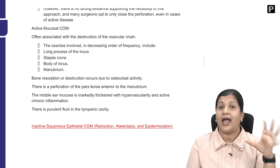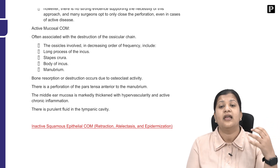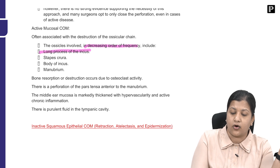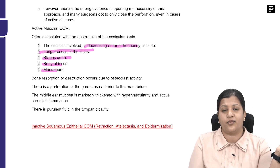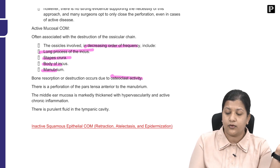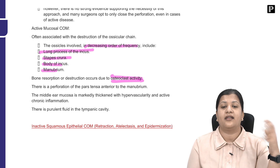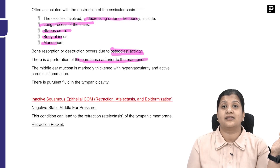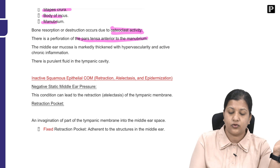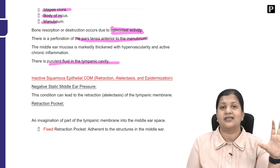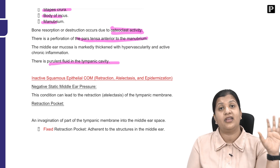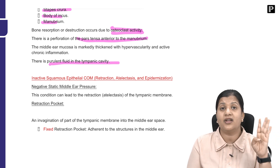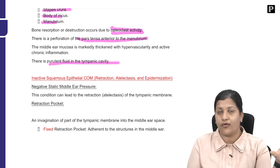In active mucosal disease, there is destruction and inflammation involving the ossicles. The order in which ossicles are involved is: long process of incus, stapes, body of incus, and manubrium. Bony resorption or destruction occurs mainly due to osteoclastic activity, with perforation of the pars tensa extending to the manubrium of the malleus. The middle ear mucosa is thickened, there is active and chronic inflammation, and sometimes pus is seen in the middle ear cavity.